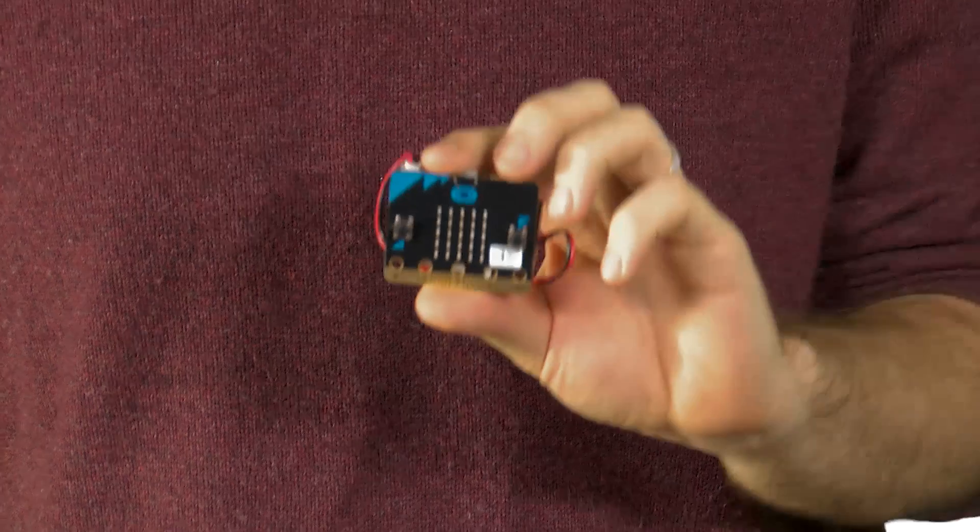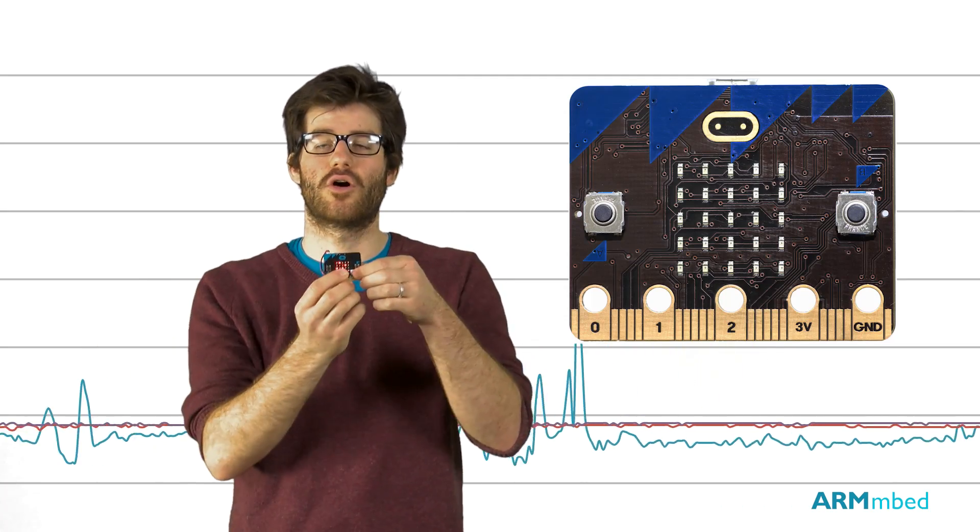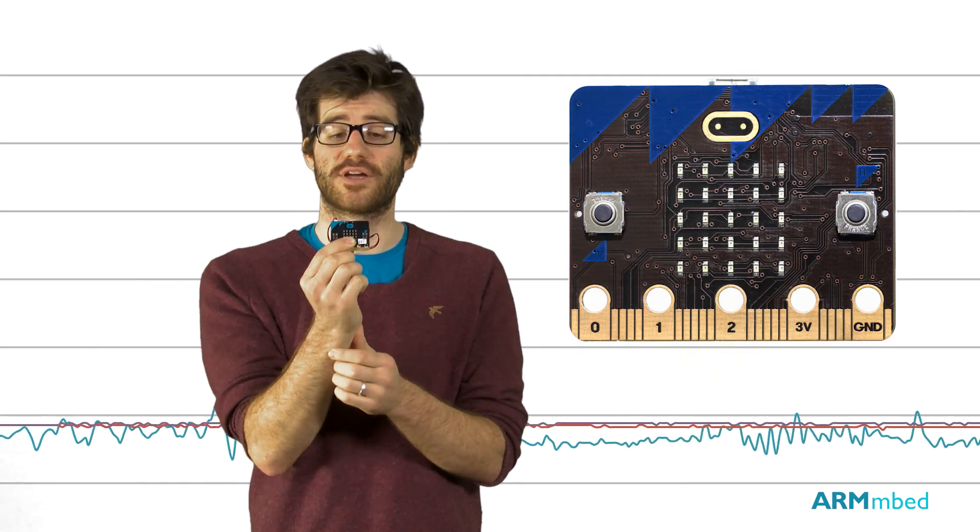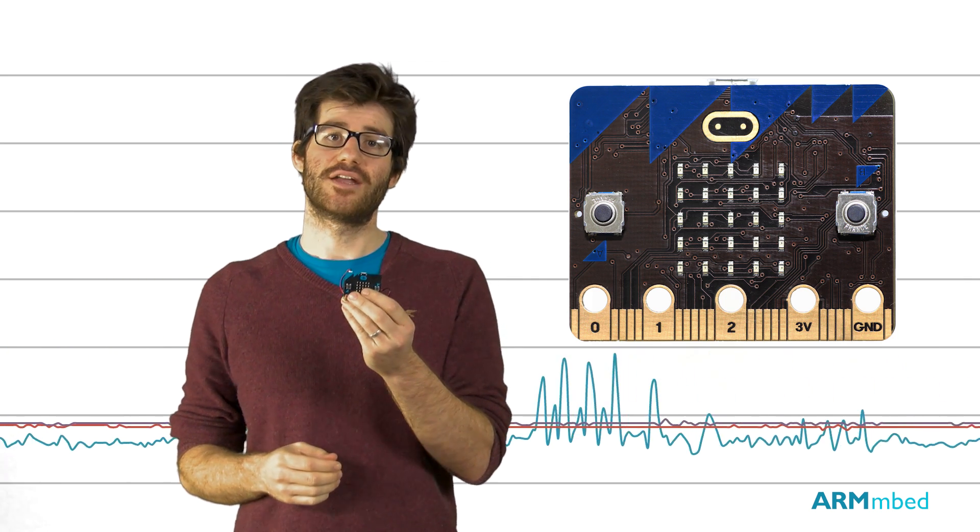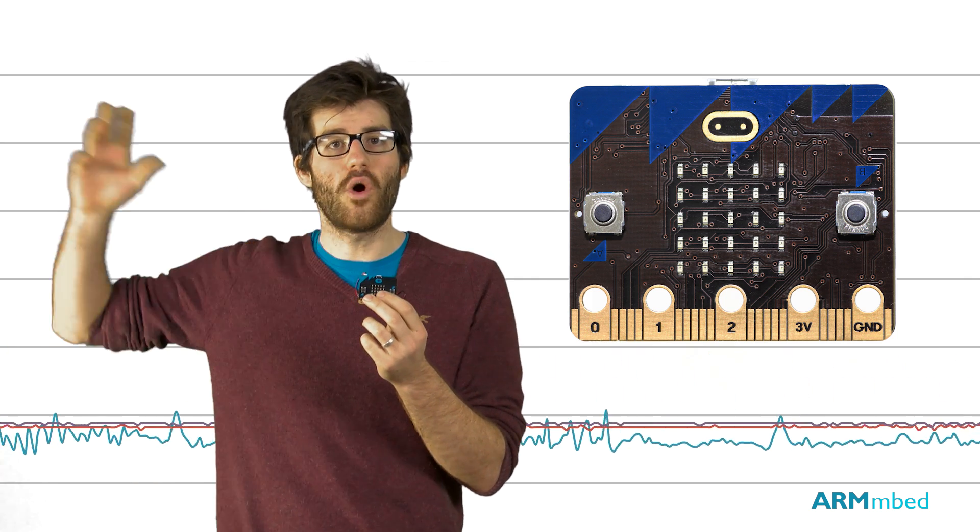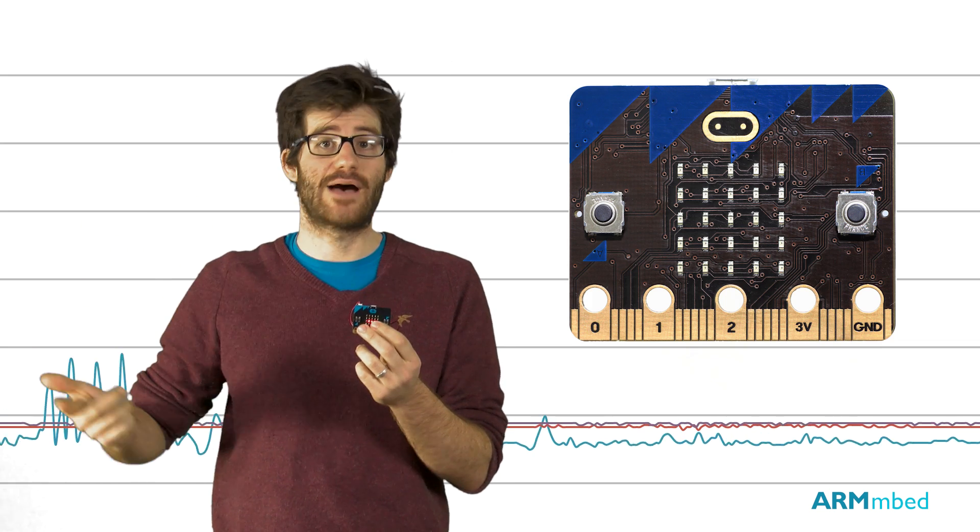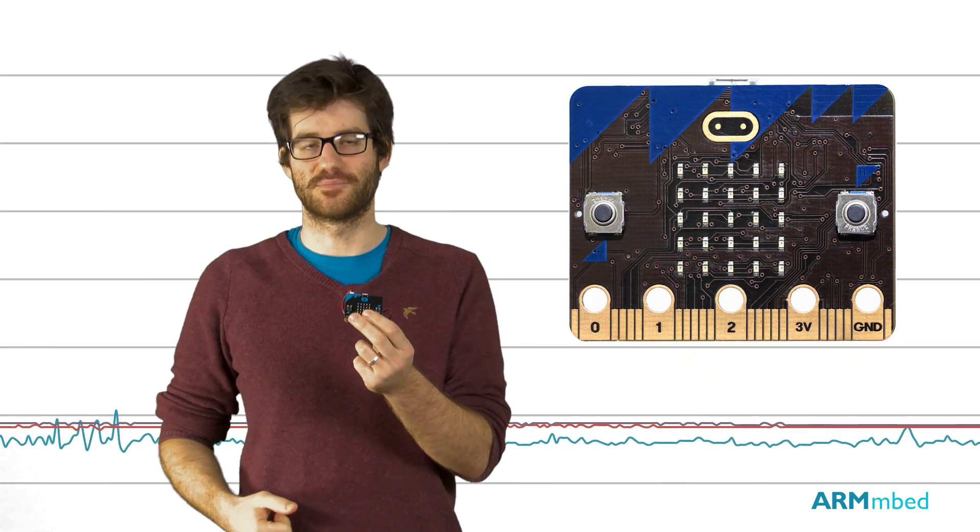The first of these is called an accelerometer which can detect the motion of how the device is moving. And the other feature that we really love is the Bluetooth low energy radio which can send signals wirelessly to phones, tablets and computers that are listening for them.